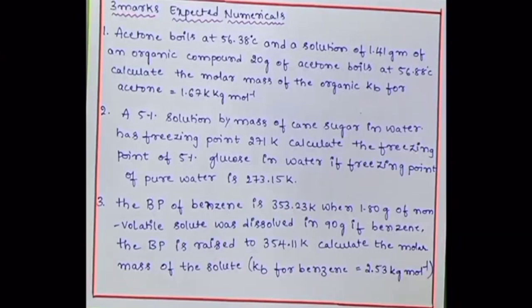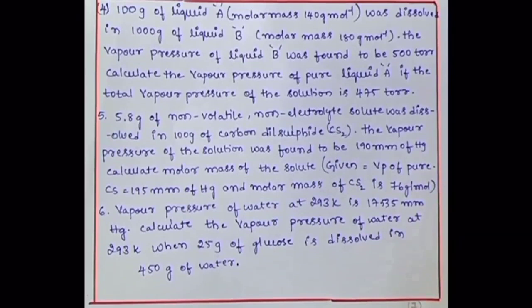The boiling point of benzene is 353.23 kelvin. When 1.80 gram of non-volatile solute was dissolved in 90 gram of benzene, boiling point is raised to 354.11 kelvin. Calculate the molar mass of the solute, Kb for benzene value is given. Next problem on vapor pressure: 100 gram of liquid A was dissolved in 1000 gram of liquid B. The vapor pressure of liquid B was found to be 500 torr. Calculate the vapor pressure of pure liquid A if total pressure of the solution is 475 torr.